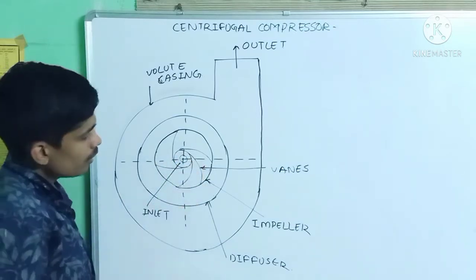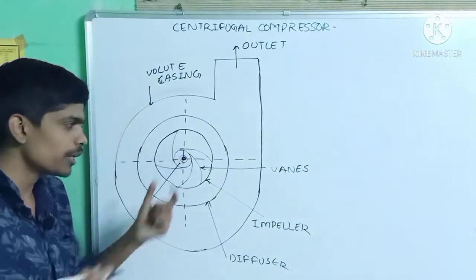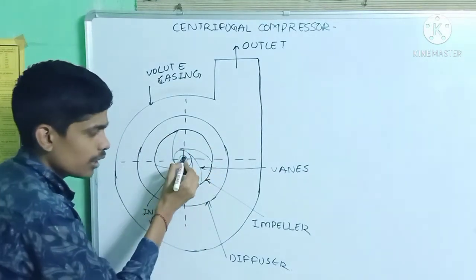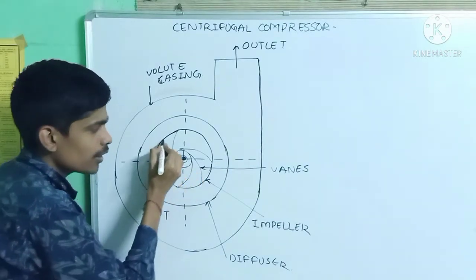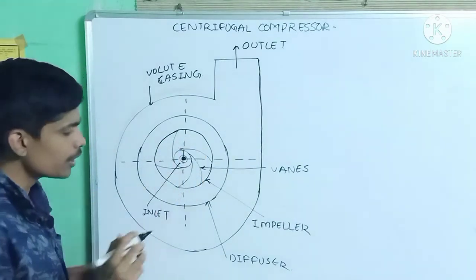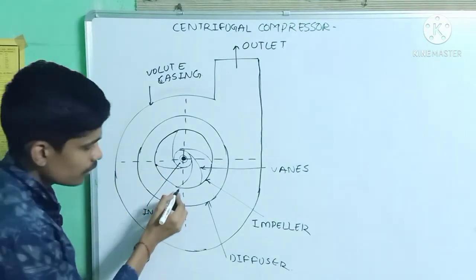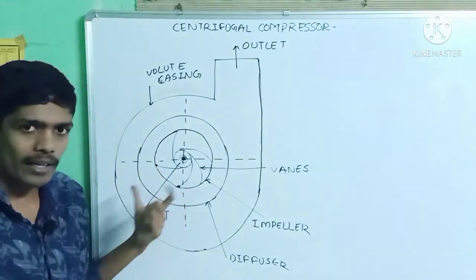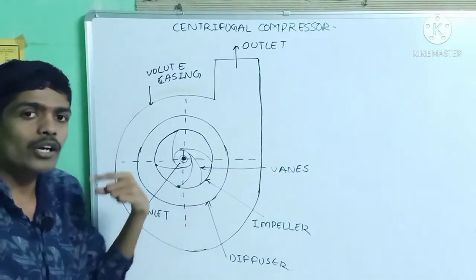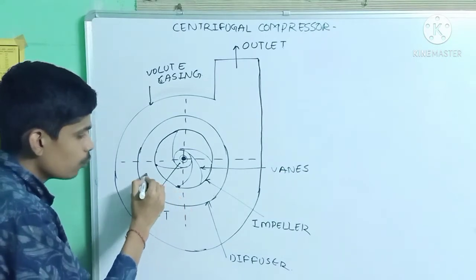When the impeller rotates, the vapor refrigerant from the inlet moves toward the periphery of the impeller and reaches the tip of the vanes. Here it attains kinetic energy. This kinetic energy is then converted into pressure energy as the vapor refrigerant moves through the diffuser.